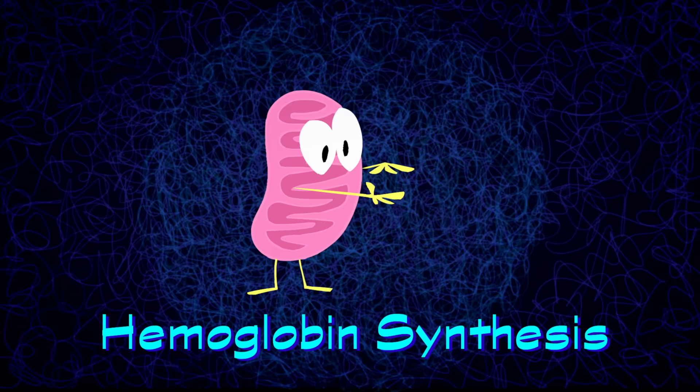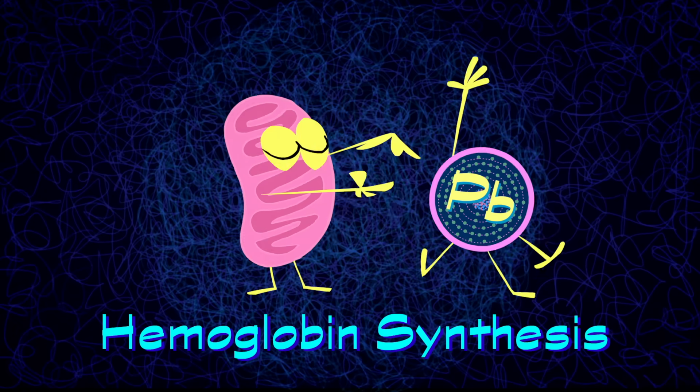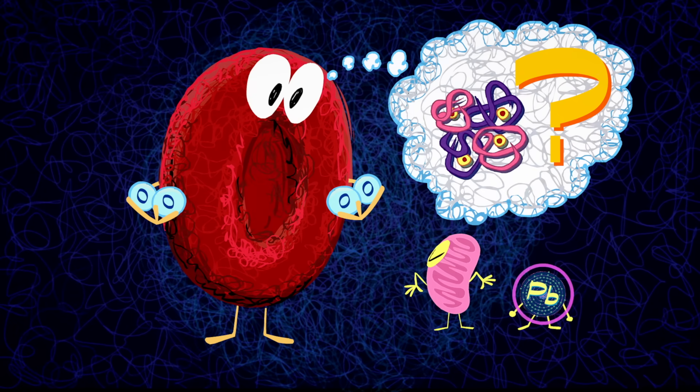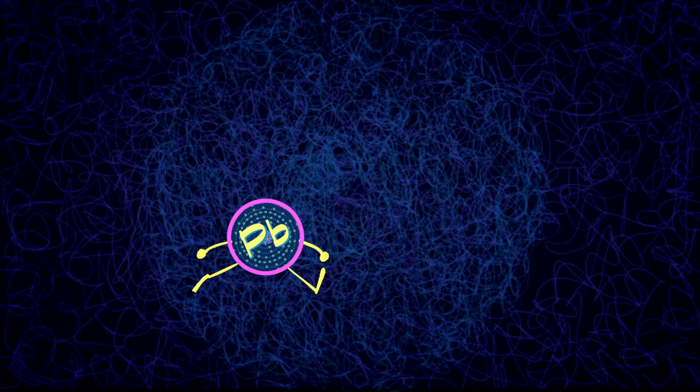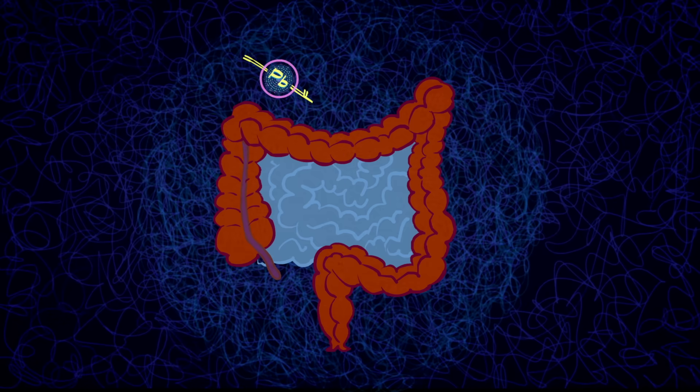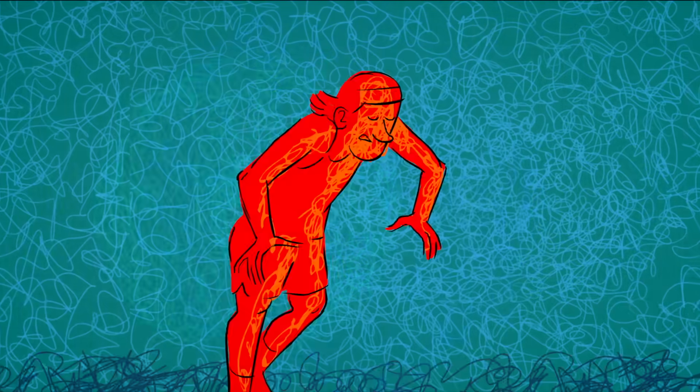For example, lead can disrupt the synthesis of hemoglobin, an essential protein to the body's oxygen transporting red blood cells, and it can compete with iron to be absorbed in the intestines. Both things can lead to anemia and fatigue.